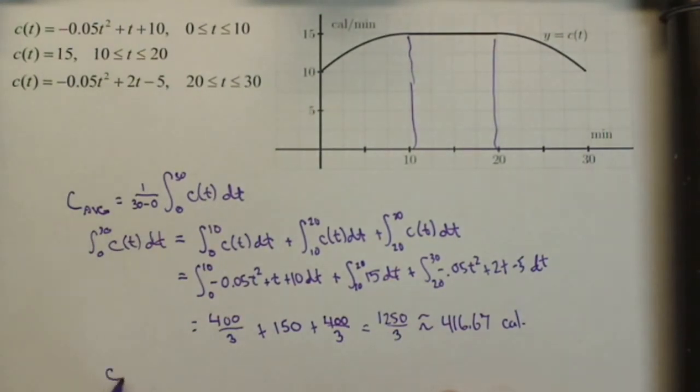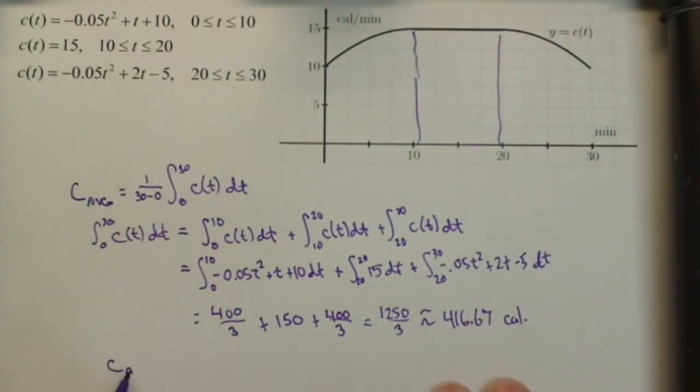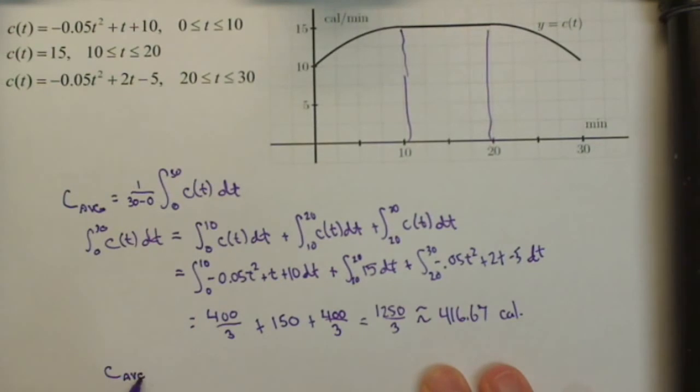Now let's turn it into our C average. Well, we're doing 416.67 calories total over 30 minutes, so to get the number per minute, we're gonna divide by the number of minutes, so 416.67 divided by 30, or multiplied by 1 30th, and we get that on average, we burned 13.89 calories per minute.